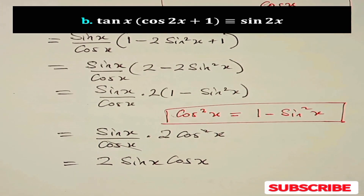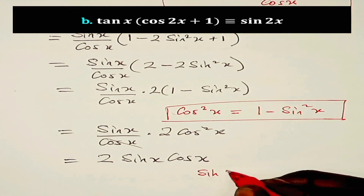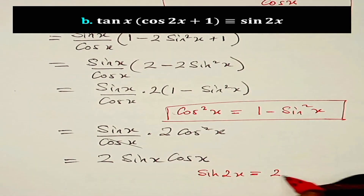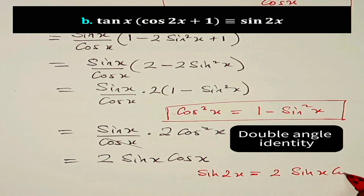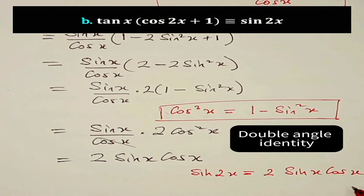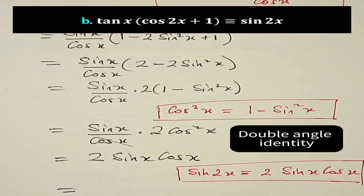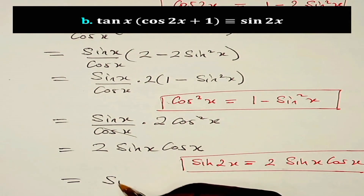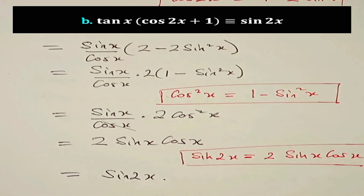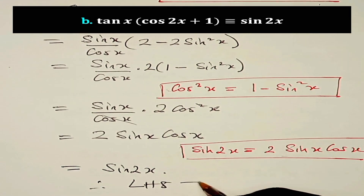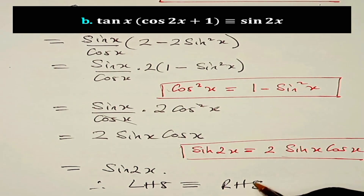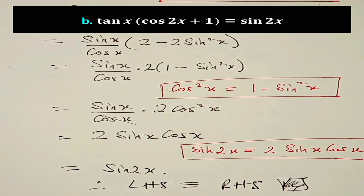Recall the double angle formula for sine: sin 2x is equal to 2 sin x cos x. So we can replace 2 sin x cos x with sin 2x. Then the left hand side is sin 2x. Therefore the left hand side is identical to the right hand side. We have come to the end of this lesson. Thanks for watching.